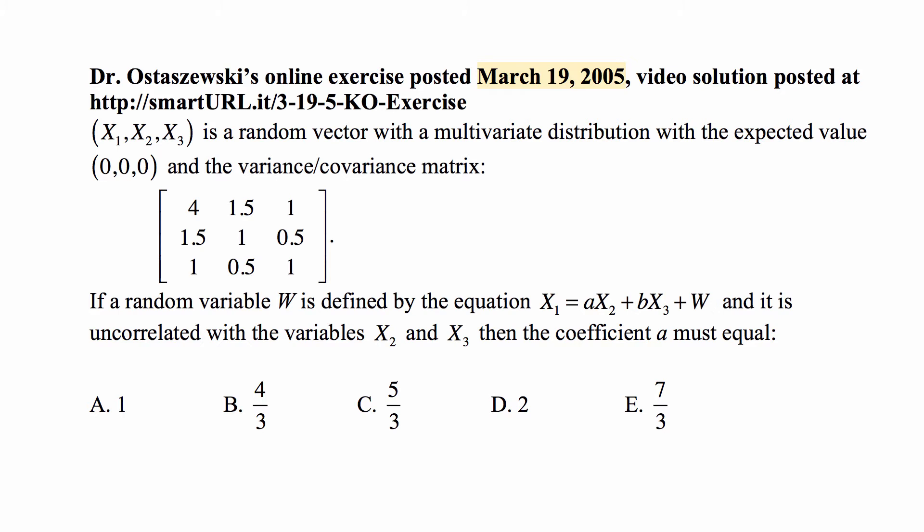Covariance of X2 and X1 is 1.5 and it's the same as covariance of X1 and X2. Variance of X2 is 1. Covariance of X2 and X3 is 0.5. Covariance of X3 and X1 is 1. Covariance of X3 and X2 is 0.5. And variance of X3 is 1.